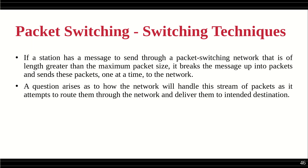A question arises as to how the network will handle the stream of packets as it attempts to route them through the network and deliver them to the intended destination. The information is divided into different packets, and with each packet you attach control information — that header — and it is sent through the network. The intermediate switching nodes, or routers, handle these packets and efficiently take them to the correct receiver, because the same information is now being sent through different routes.